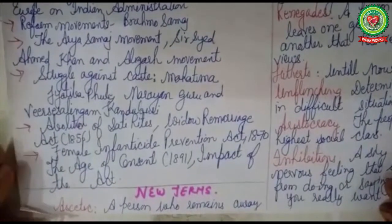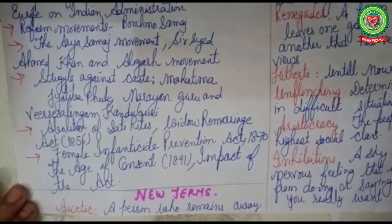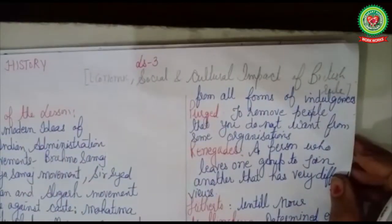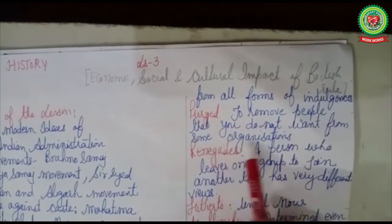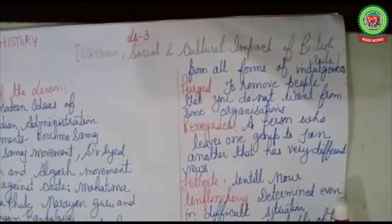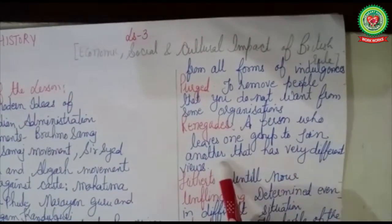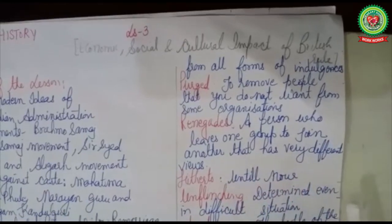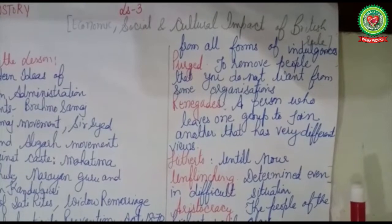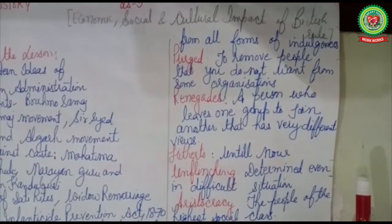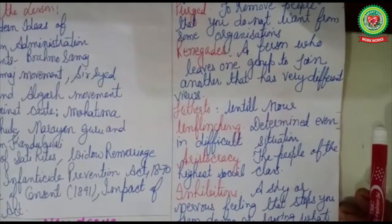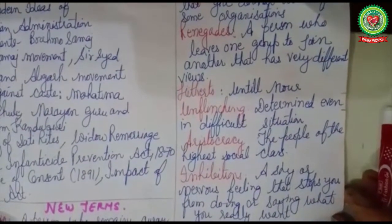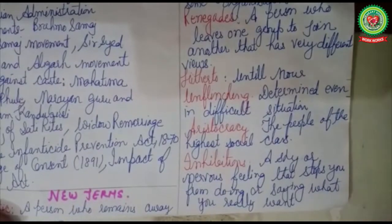Before going ahead, we will go through the new terms of this lesson. Ascetic: a person who remains away from all forms of indulgences. Purge: to remove people you do not want from an organization. Renegades: a person who leaves one group to join another with very different views. Hitherto: until now. Unflinching: determined even in a difficult situation. Aristocracy: people of the highest social class. Inhibitions: a shy or nervous feeling that stops you from doing or saying what you really want.